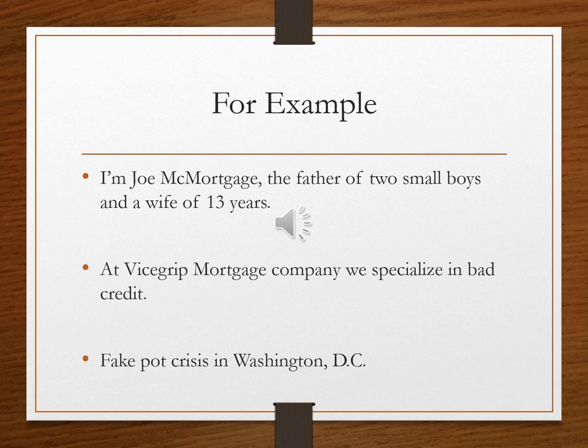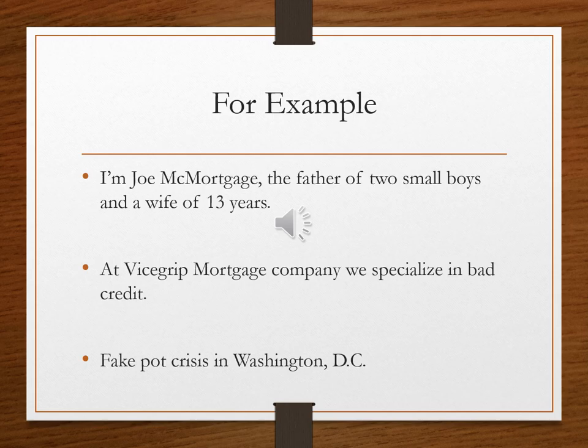Another radio ad says: 'At Vicegrip Mortgage, we specialize in bad credit.' What they're probably trying to say is they specialize in finding loans for people who have bad credit — but it sounds like they specialize in giving bad credit, which is exactly the opposite message you want to send as a mortgage company. It's odd that both examples are from mortgage company ads. The last one is a newspaper headline: 'Fake pot crisis in Washington D.C.' Is the crisis fake, or is the pot fake? Either interpretation is possible — a sentence clearly taken in two completely different ways.